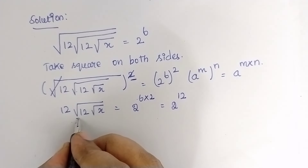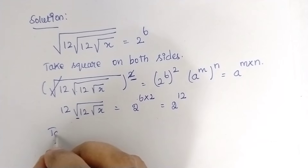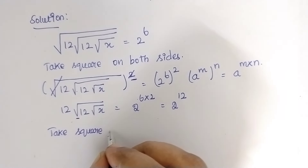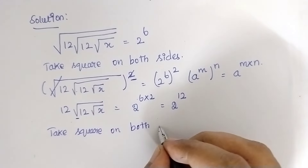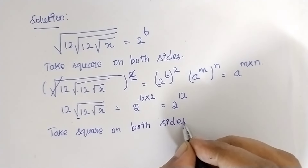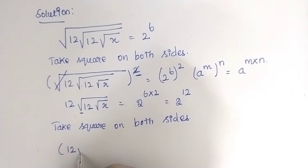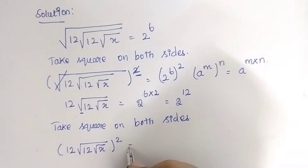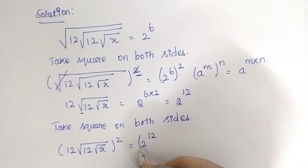Now we need to remove this square root also. So again, take square on both sides. Now this equation becomes: the square of 12 times the square root of 12x, which is equal to (2^12)².